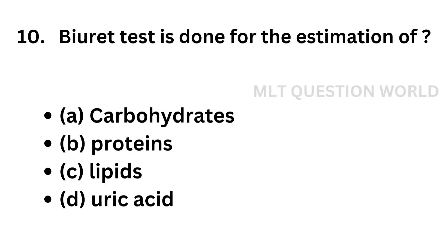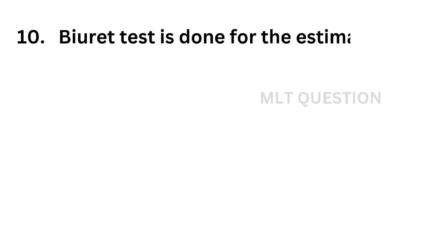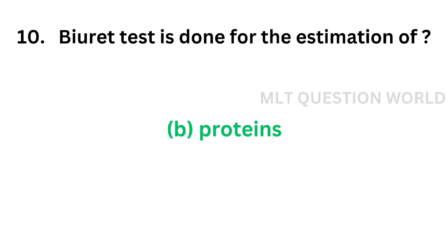Question number 10. Biuret test is done for the estimation of: option A, Carbohydrates; option B, Proteins; option C, Lipids; option D, Uric acid. Biuret test is done for the estimation of proteins. The correct answer is option B, Proteins.